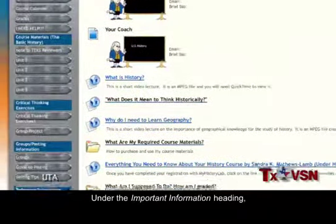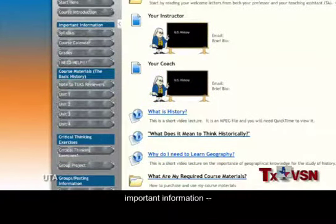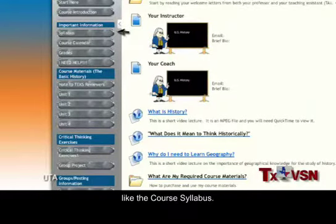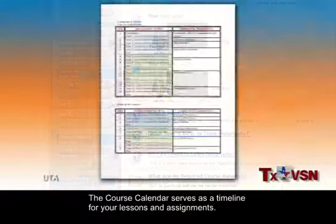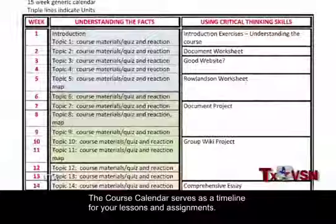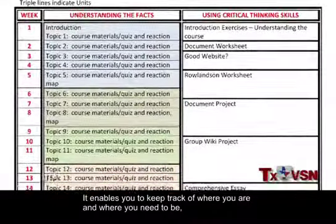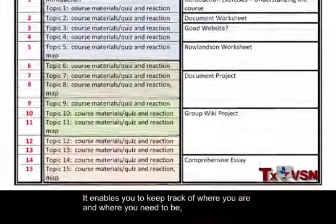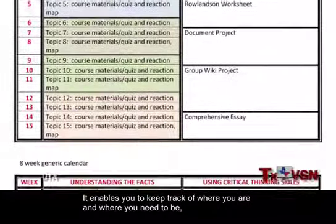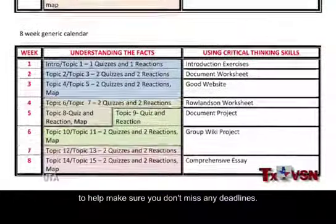Under the Important Information heading, you'll find — what else? — important information, like the course syllabus. The course calendar serves as a timeline for your lessons and assignments. It enables you to keep track of where you are and where you need to be, to help make sure you don't miss any deadlines.